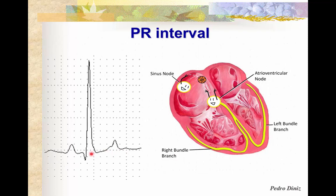First, let's talk about the PR interval. What is it? It's basically the time it takes for the depolarization to leave the SA node, travel through the myocardium, and reach the AV node and be conducted through the AV node before it's sent to the ventricles by the fast conduction system of the heart.